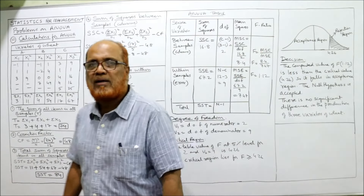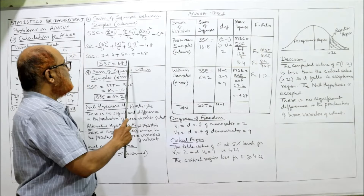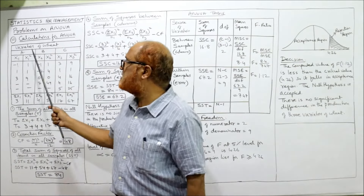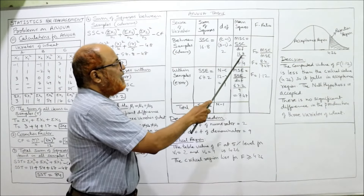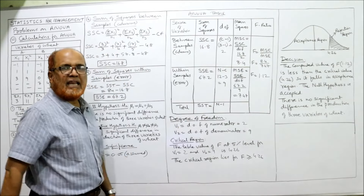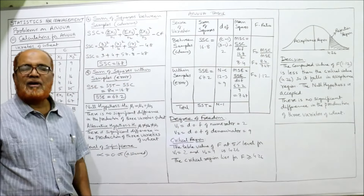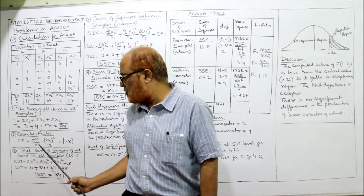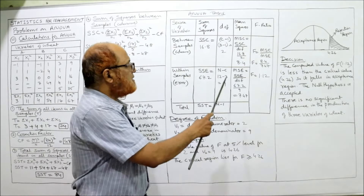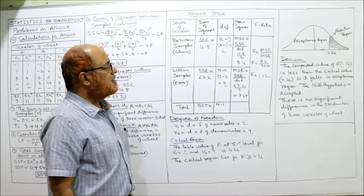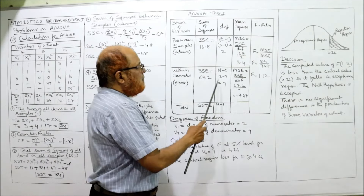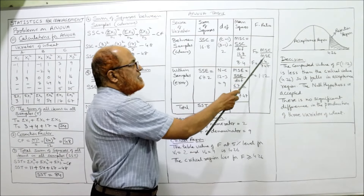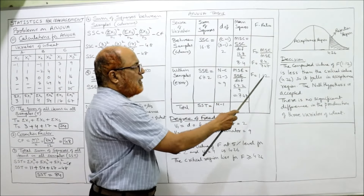ANOVA table: between samples SSC = 16.8, df = c−1 = 3−1 = 2, MSC = 16.8÷2 = 8.4. Within samples SSE = 67.2, df = n−c = 12−3 = 9, MSE = 67.2÷9 = 7.47. F = MSC ÷ MSE = 8.4 ÷ 7.47 = 1.12. This is the computed value of F.